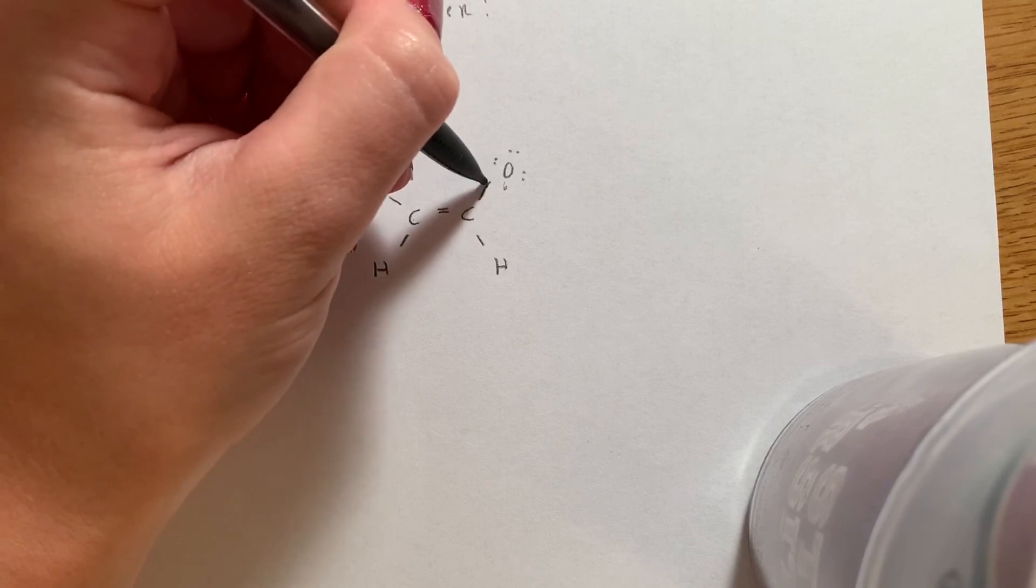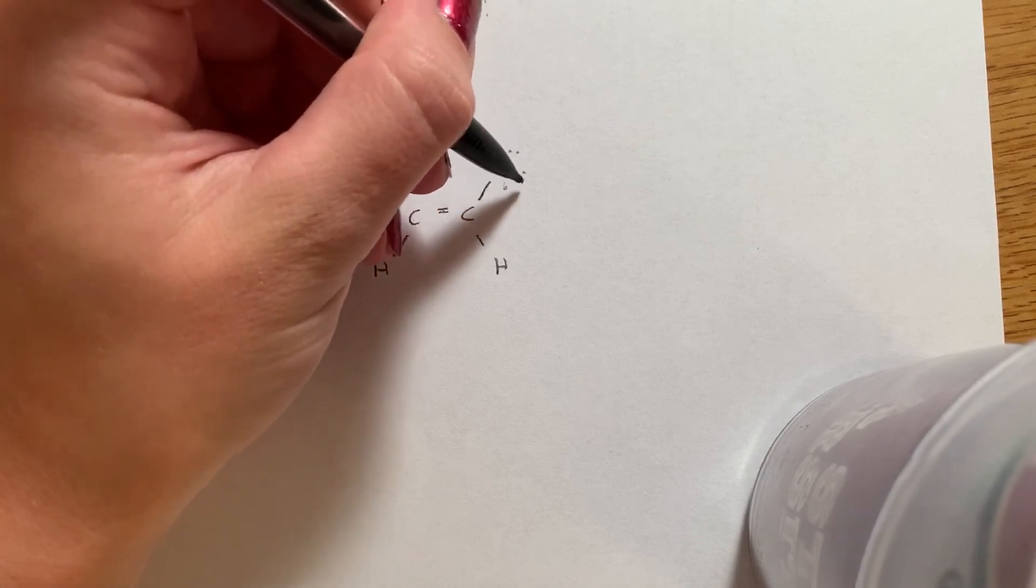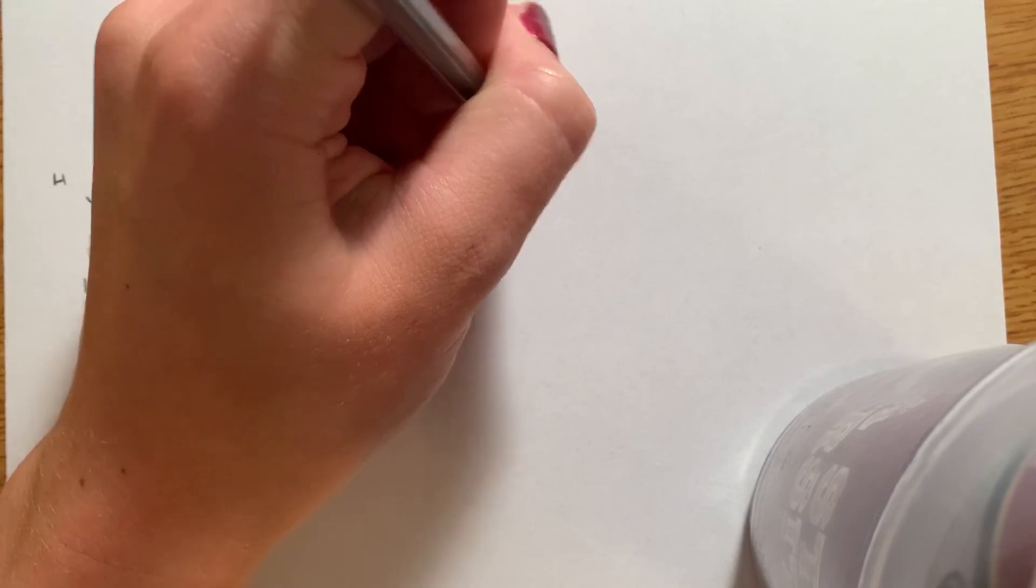Six minus electrons minus one, two, three, four, five, six, seven. So it means that this oxygen has a negative charge on it.